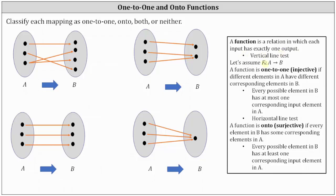For these functions, we will assume we have a mapping from A to B. A function is one-to-one or injective if different elements in A have different corresponding elements in B, or equivalently, if every possible element in B has at most one corresponding input element in A. A function is onto or surjective if every element in B has some corresponding element in A, or equivalently, if every possible element in B has at least one corresponding input element in A.